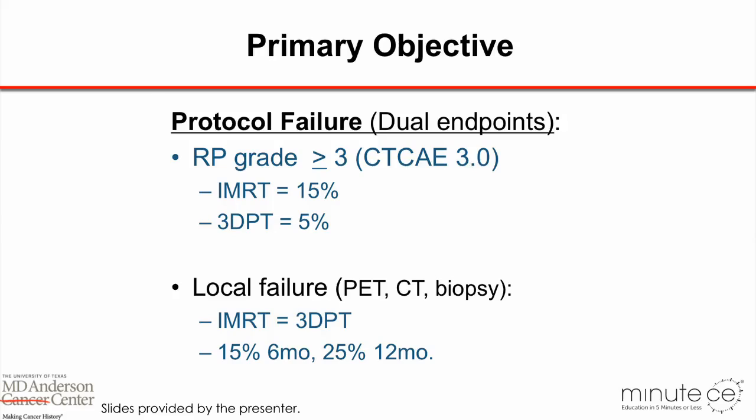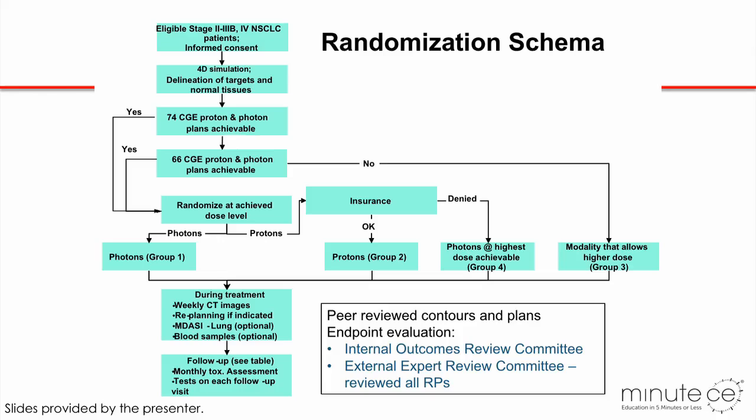The primary objective was pneumonitis grade 3 or above. Historically, after IMRT it is about 15%, and after proton treatment it is 5%. Local failure was set as the same in both arms: 15% at six months and 25% at 12 months. This is the randomization schema.